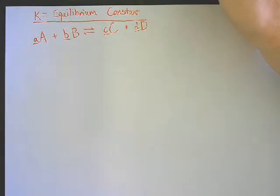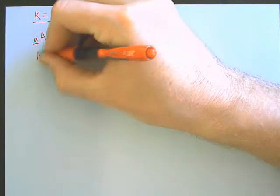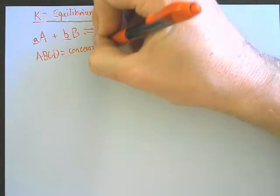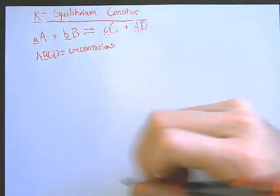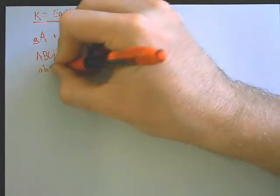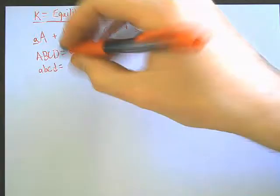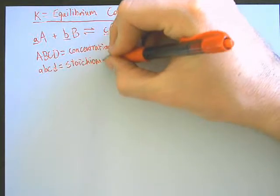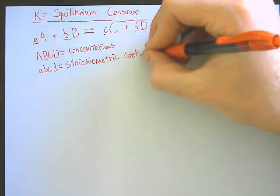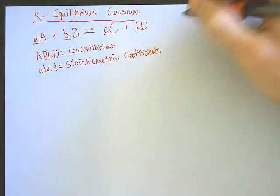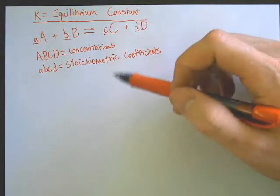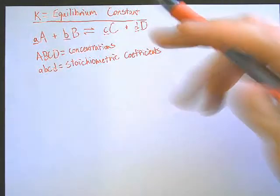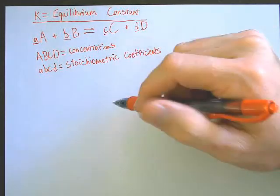Just for future reference when we come back to look at these notes: uppercase A, B, C, D is going to equal concentrations, and our lowercase is going to equal stoichiometric coefficients. Stoichiometry is just how much of the stuff we have — quantifying that. Coefficients, like in math, that's just like 2X — it's the thing that goes in front of whatever substance we're using.